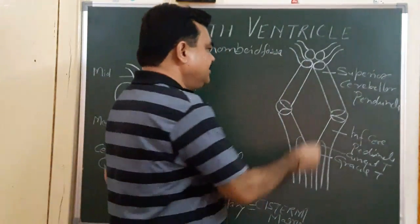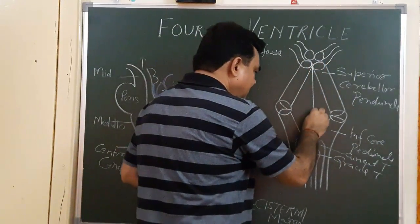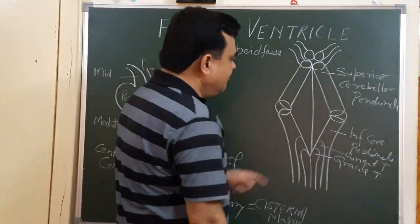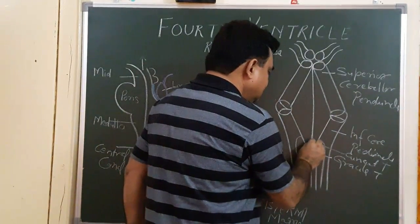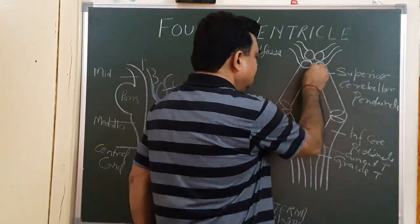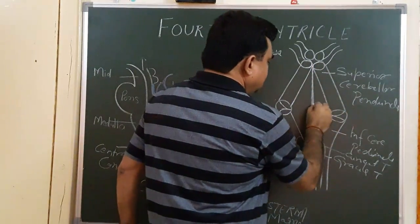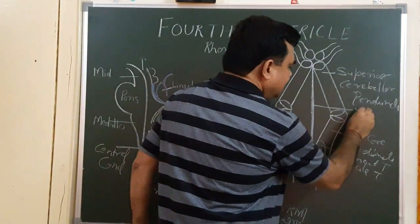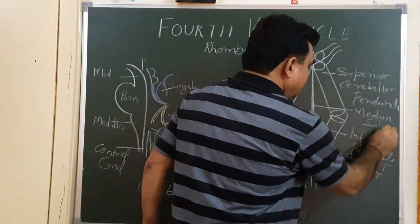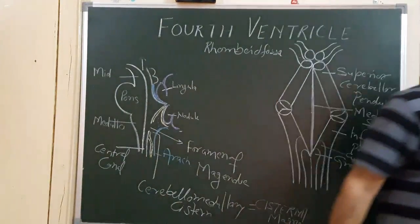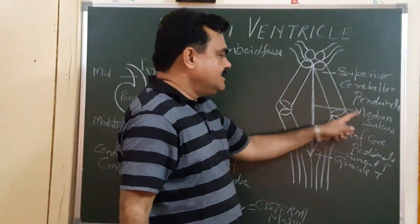This fossa is divided by a median sulcus. This median sulcus divides the fossa into the right and left halves.